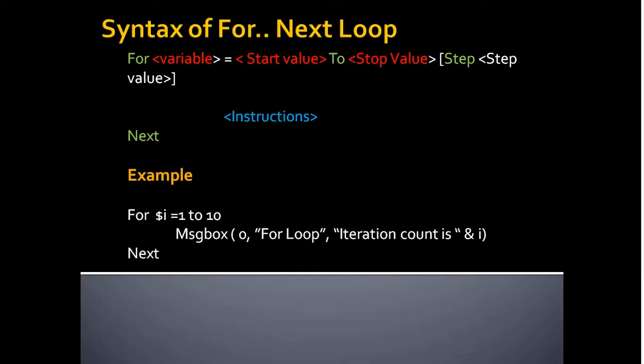The title of the message box is For Loop and it displays the prompt message as iteration count is followed by the variable i. So it should iterate from value 1 by displaying iteration count is 1, and if you click OK then it should display iteration count is 2.